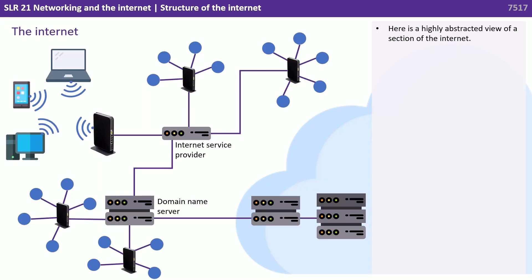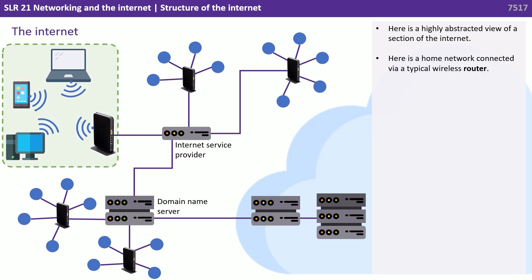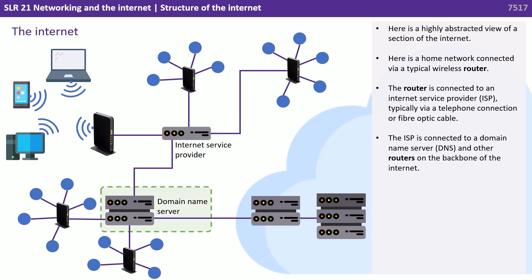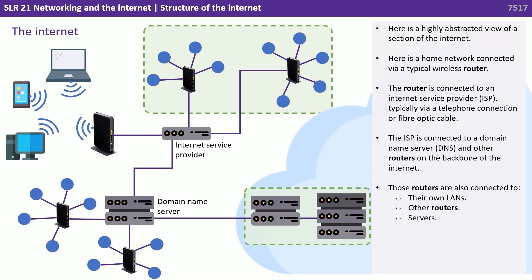Here is a highly abstracted view of a section of the internet. Here is a home network connected via a typical wireless router. The router is connected to an internet service provider, or ISP, typically via telephone connection or fibre optic cable. The ISP is connected to a domain name server and other routers on the backbone of the internet. Those routers are also connected to their own LANs, other routers and servers.